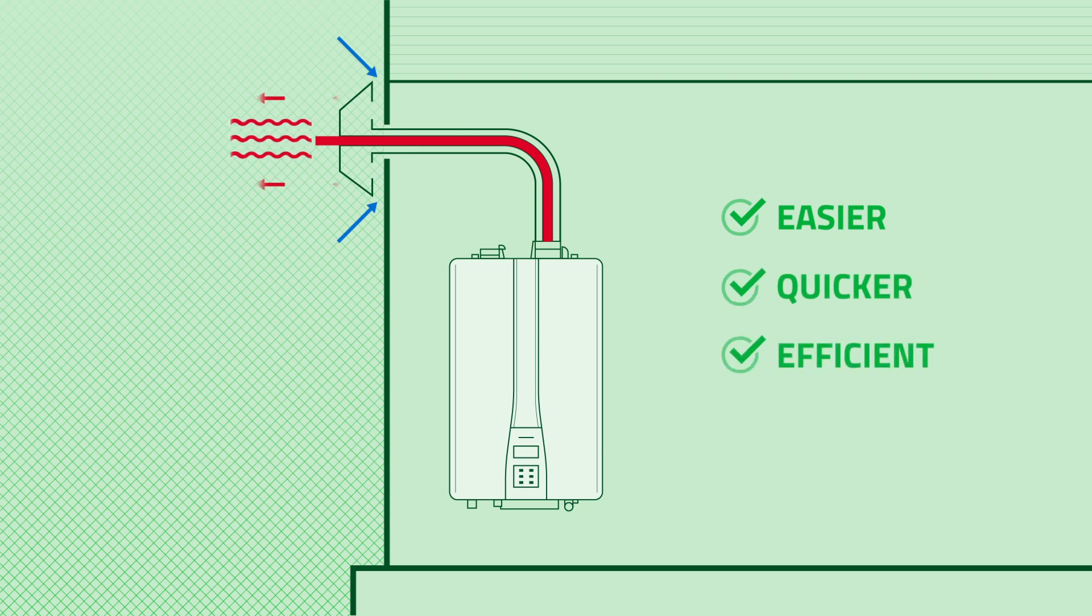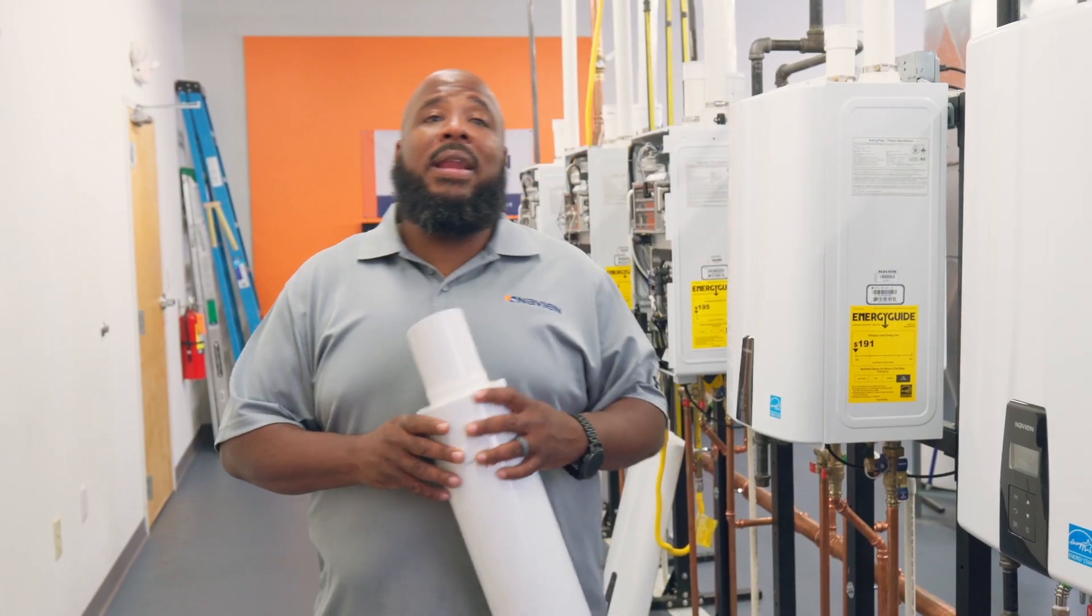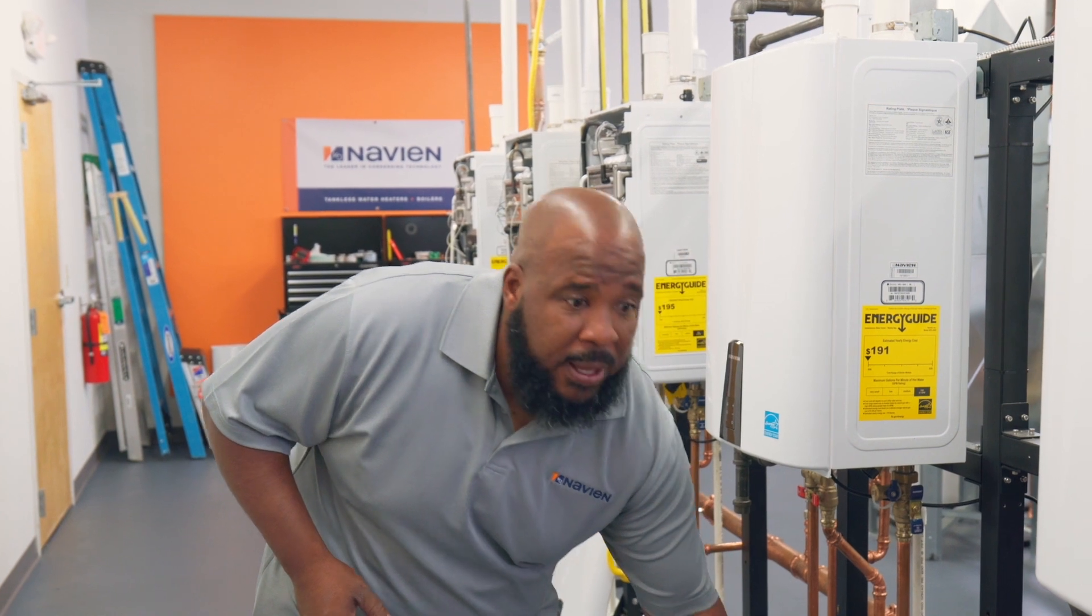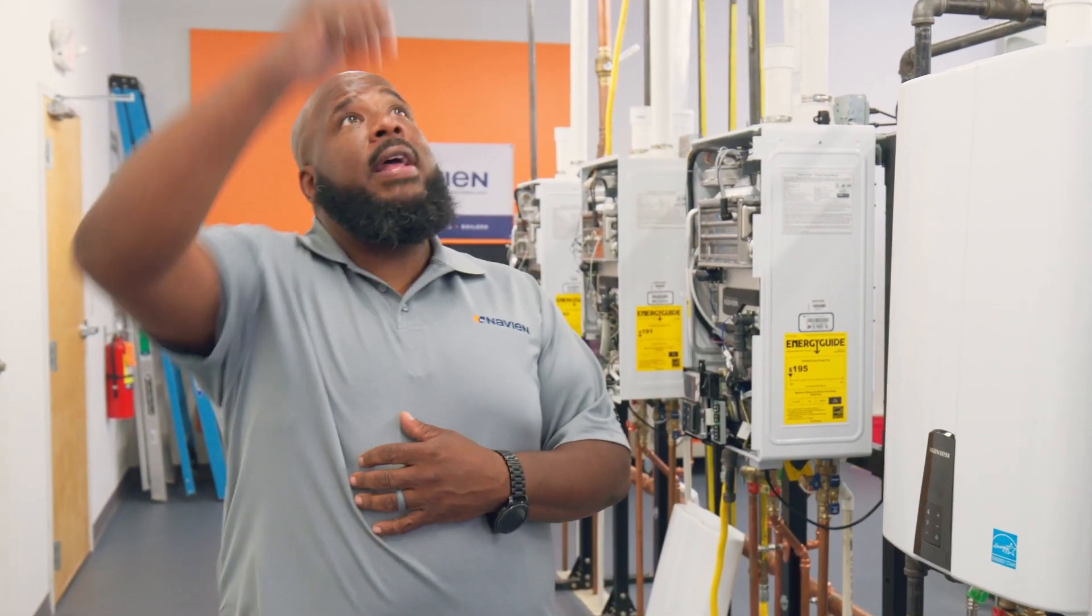Now on the other hand, another way that we can reduce penetrations through the home, especially if we have multiple systems, is the common vent. The common vent is good for commercial applications and also residential applications that may require more than one system.